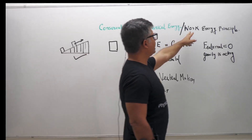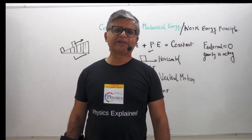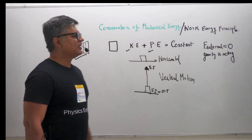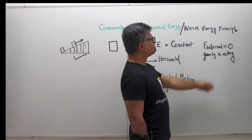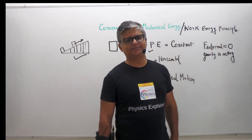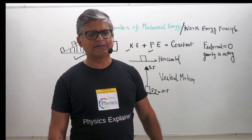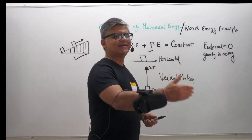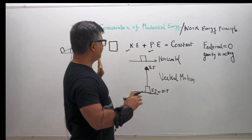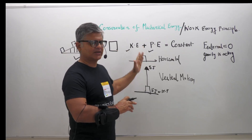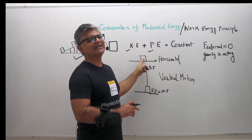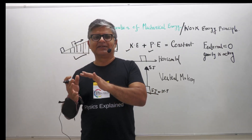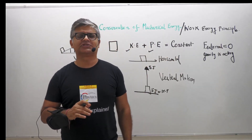Let's talk about the second one, which is the Work Energy Principle. Students are confused — what exactly is the difference between this and that? Now, you will have a situation where external force will be there. The work you do will get converted into energy. For example, you push — this was stationary, you do 5 joules of work, then this body gets a 5 joule kinetic energy. So the work energy principle deals with the conversion of work into energy with the help of external force.